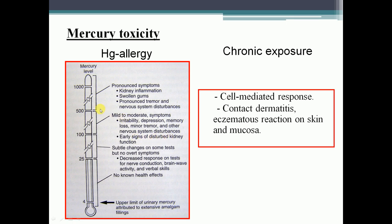At 500–1000 µg mercury level, symptoms are pronounced: kidney inflammation, swollen gums, pronounced tremors, and nervous system disturbances. This diagram and the mercury level-symptom relationship are very important — many questions can be framed from this.